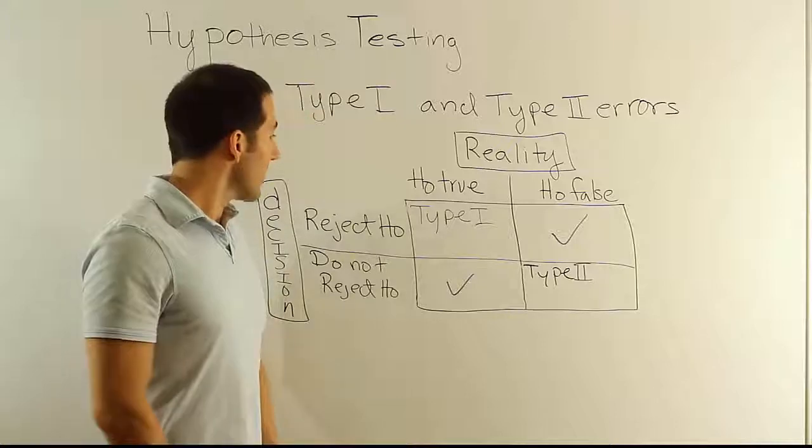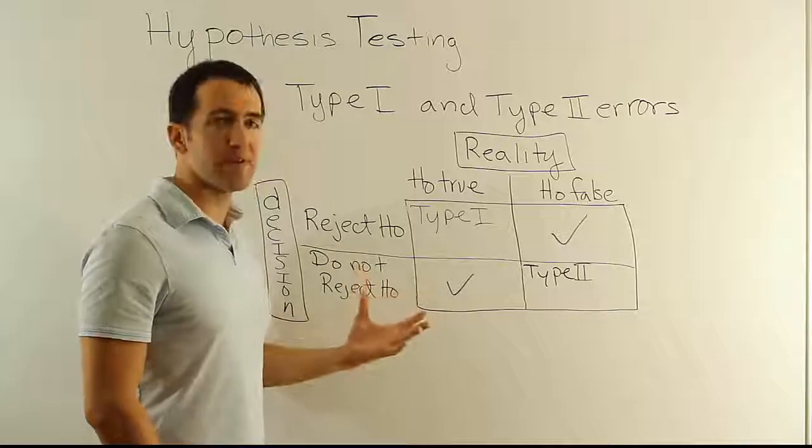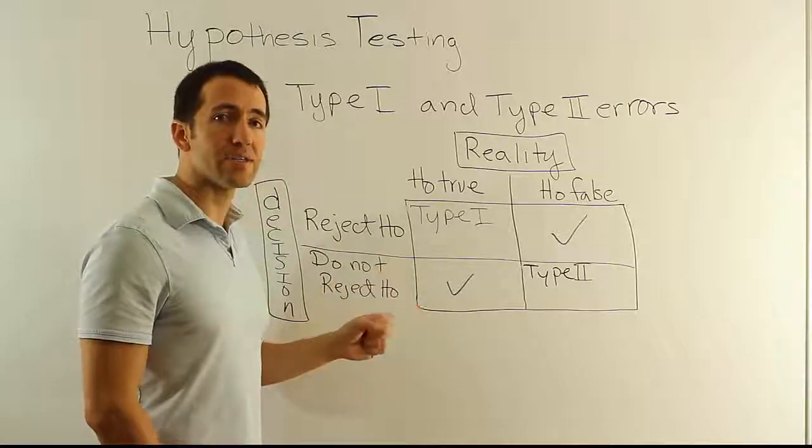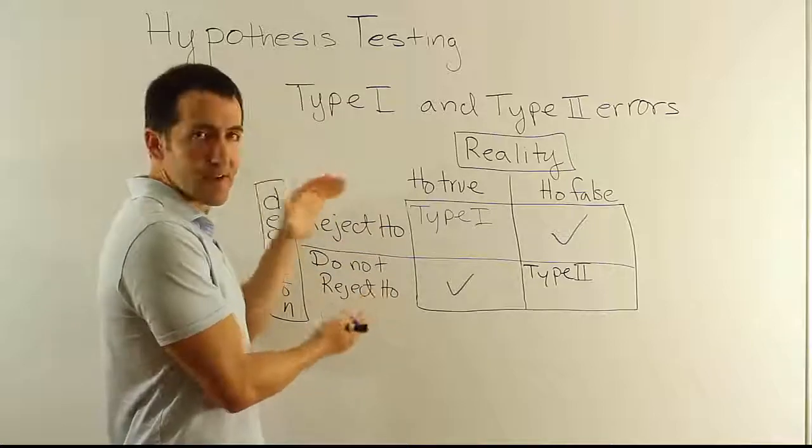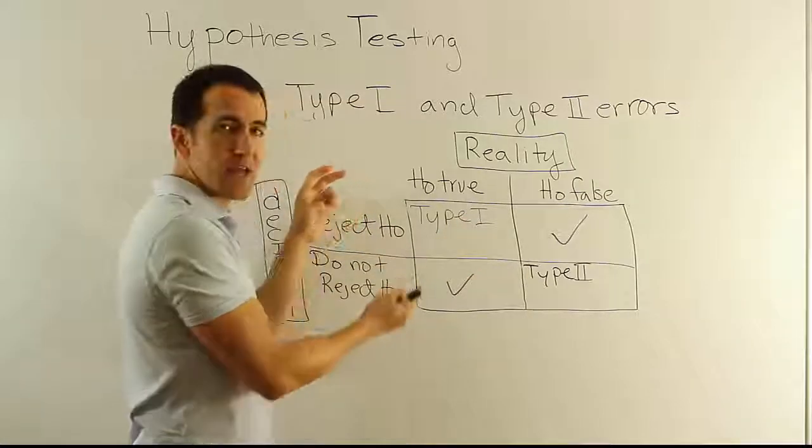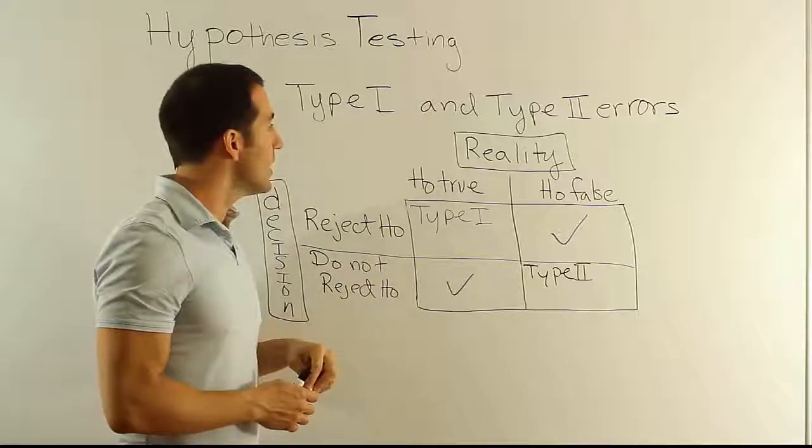Okay, so now from here, what I want to do, the last thing I want to do in this video is to really give you something you hear a lot of times in American classrooms when they teach this concept. I want to make a comparison of this set of possible decisions and outcomes to our criminal system here in the United States.